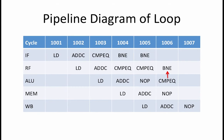We now illustrate what happens to the pipeline diagram if the loop is repeated. In cycle 1006, the store instruction enters the IF stage of the pipeline because, until we resolve whether a branch is taken or not, we assume that we should continue fetching the next instruction. If the BNE determines that it should branch back to loop, then this store instruction, which was just fetched, must be annulled by inserting a NOOP in its place. The annulment is initiated in cycle 1006 and shows up as a NOOP in the RF stage in cycle 1007. In cycle 1007, we also see that we now fetch the first instruction of the loop, which is the load instruction, so that we can repeat the loop.